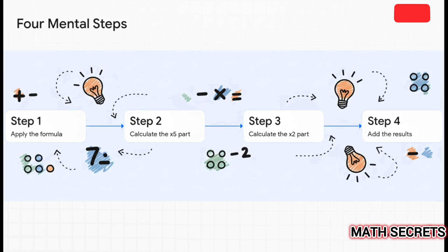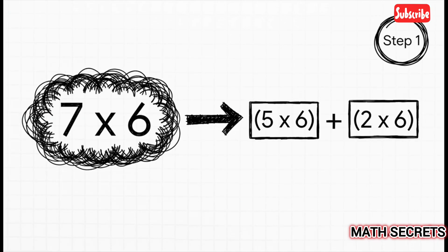Okay, we're going to solve this in four incredibly simple mental steps. First, we'll apply our new formula. Then we'll solve each of the two easy parts. And finally, we'll just add them together to get our answer. Ready? Okay, step one. We take our problem, seven times six, and we apply the rule. This immediately changes it into five times six plus two times six. See that? It already looks so much less intimidating.